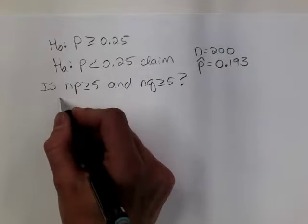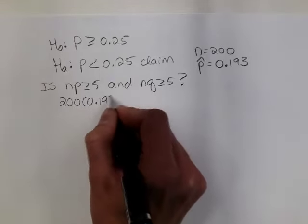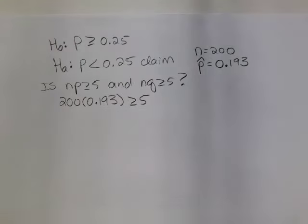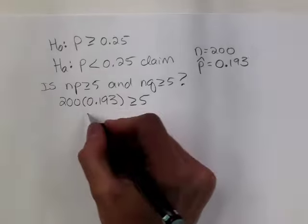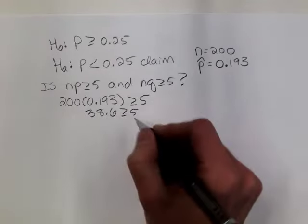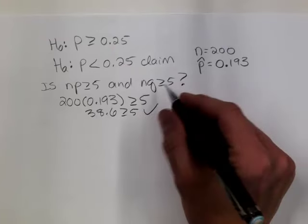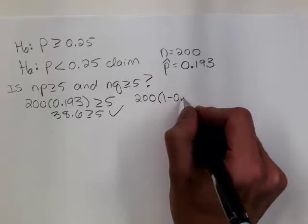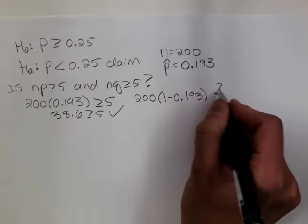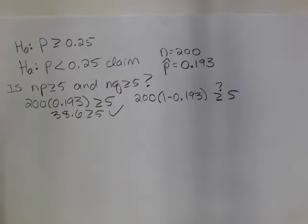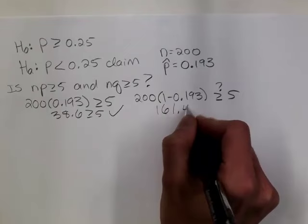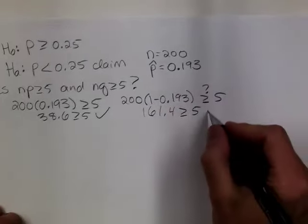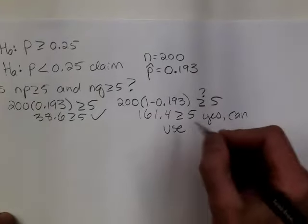Wait — I made a mistake. For the hypothesis test assumption check, I should be using P, not P-hat. Using P-hat is what we do for the confidence interval. Here we assume that P is true until proven otherwise. So correcting that: N times P = 200 times .25 = 50, which is at least 5. And N times Q = 200 times .75 = 150, which is also at least 5. So we can use the z-test here.